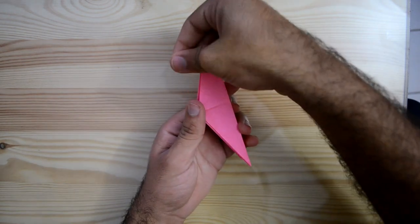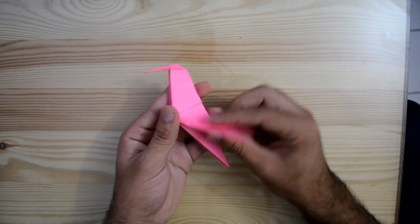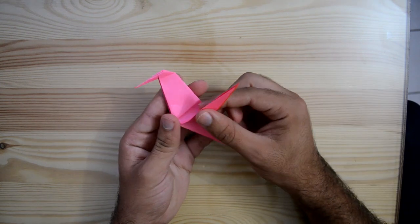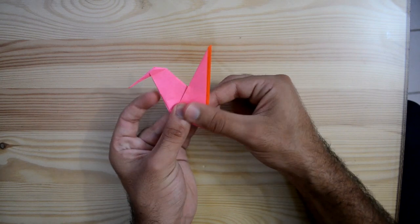Now for the final step, I'm going to make the wings. So I'm going to take this part of the paper first, this layer, and we're going to fold it up like this.